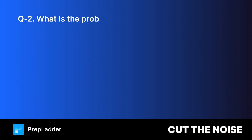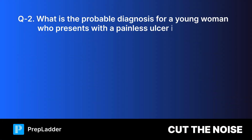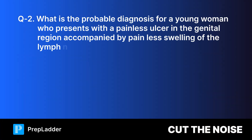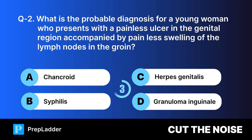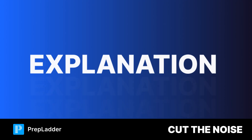Question 2: What is the probable diagnosis for a young woman who presents with a painless ulcer in the genital region accompanied by painless swelling of the lymph nodes in the groin? The correct answer is syphilis.